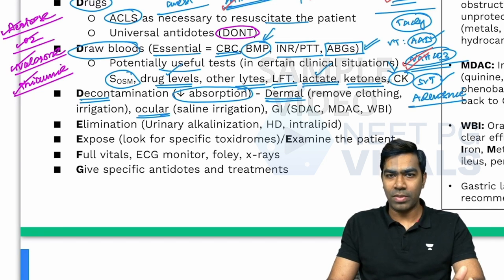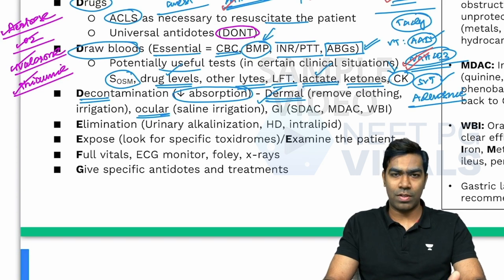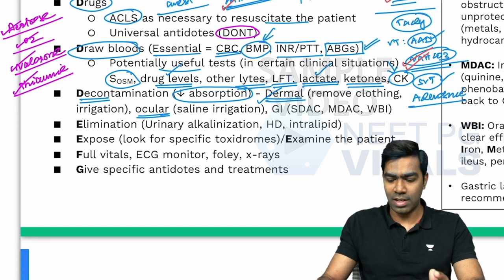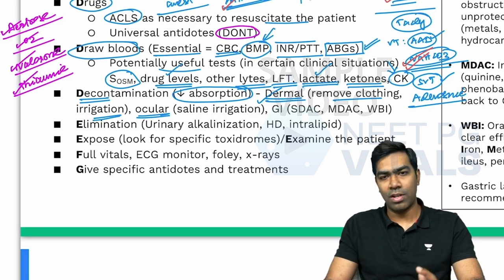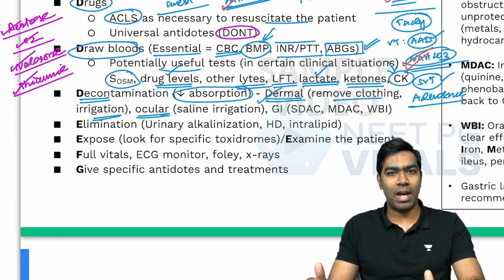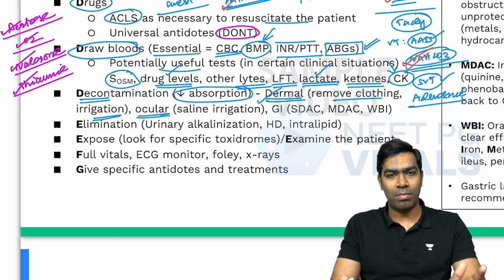This is especially important for toxins easily absorbed from the skin and mucosal surfaces. In India, one of the most common poisons is organophosphorus, which can be easily absorbed from the skin. You need to immediately remove clothing and give thorough irrigation with saline or distilled water. Make sure the person performing decontamination is wearing gloves, because the poison can be absorbed from your skin too.